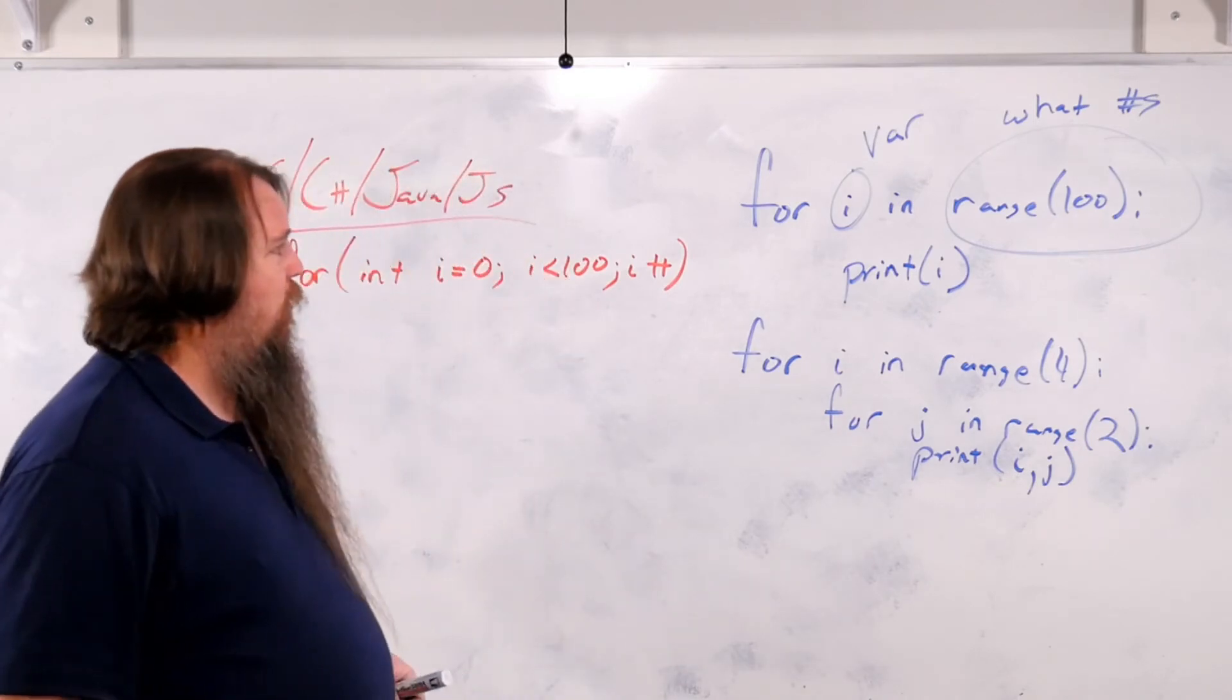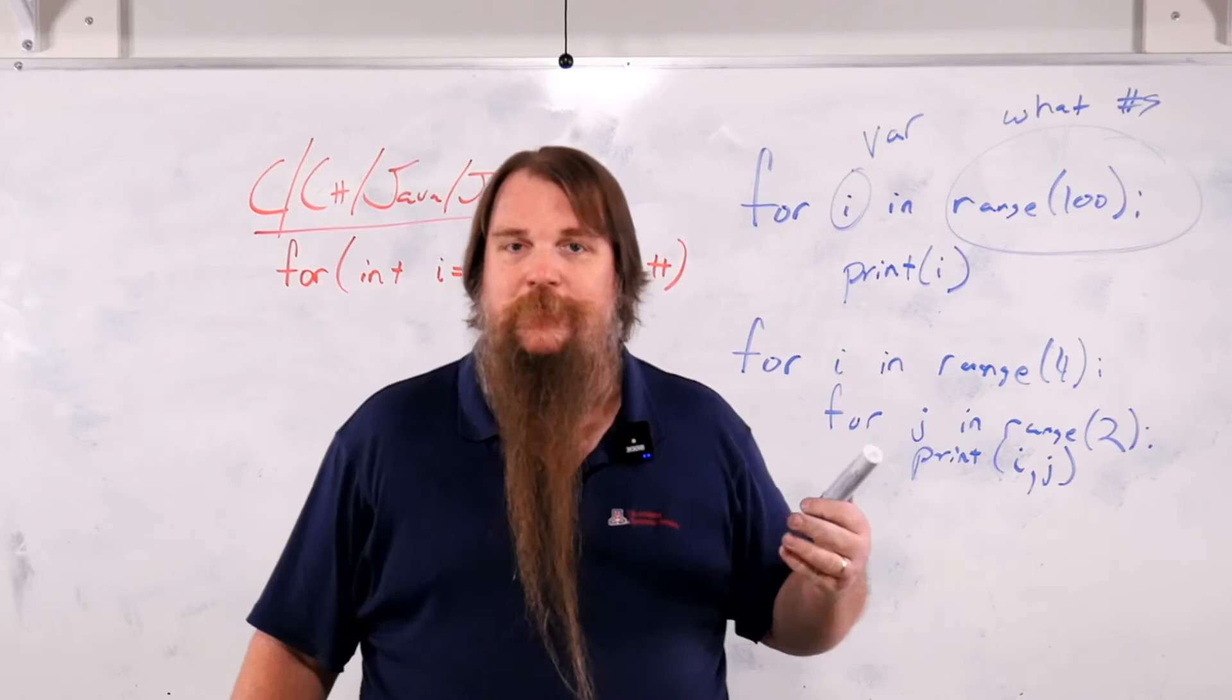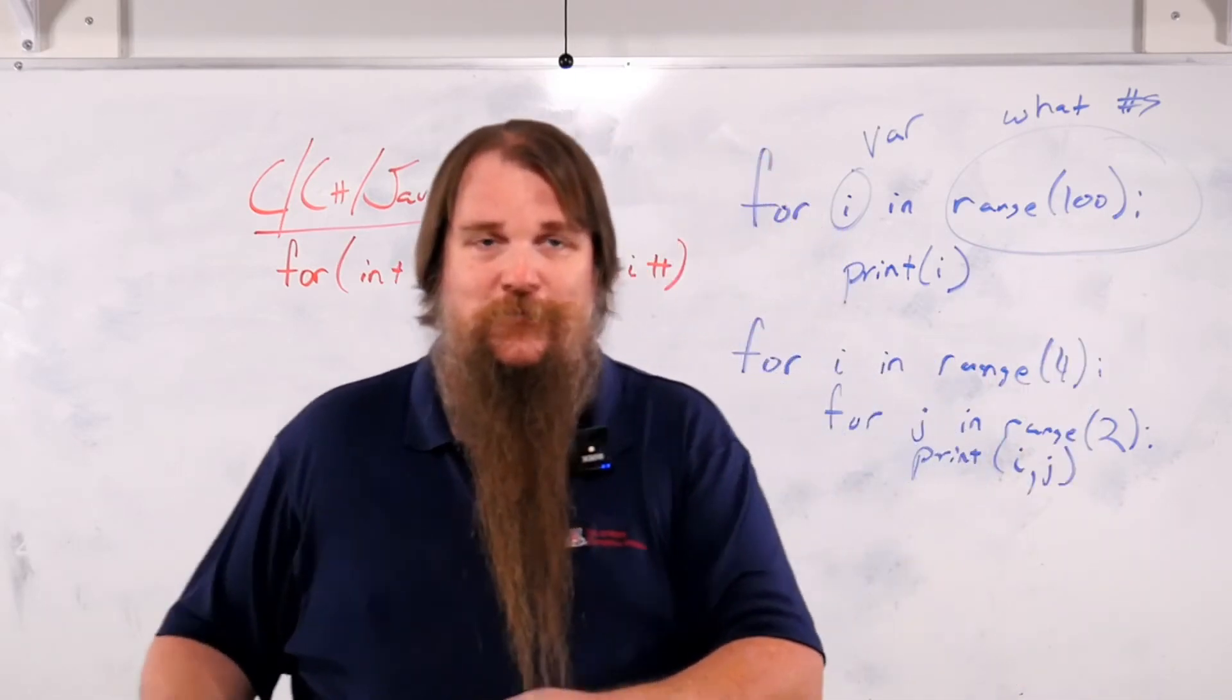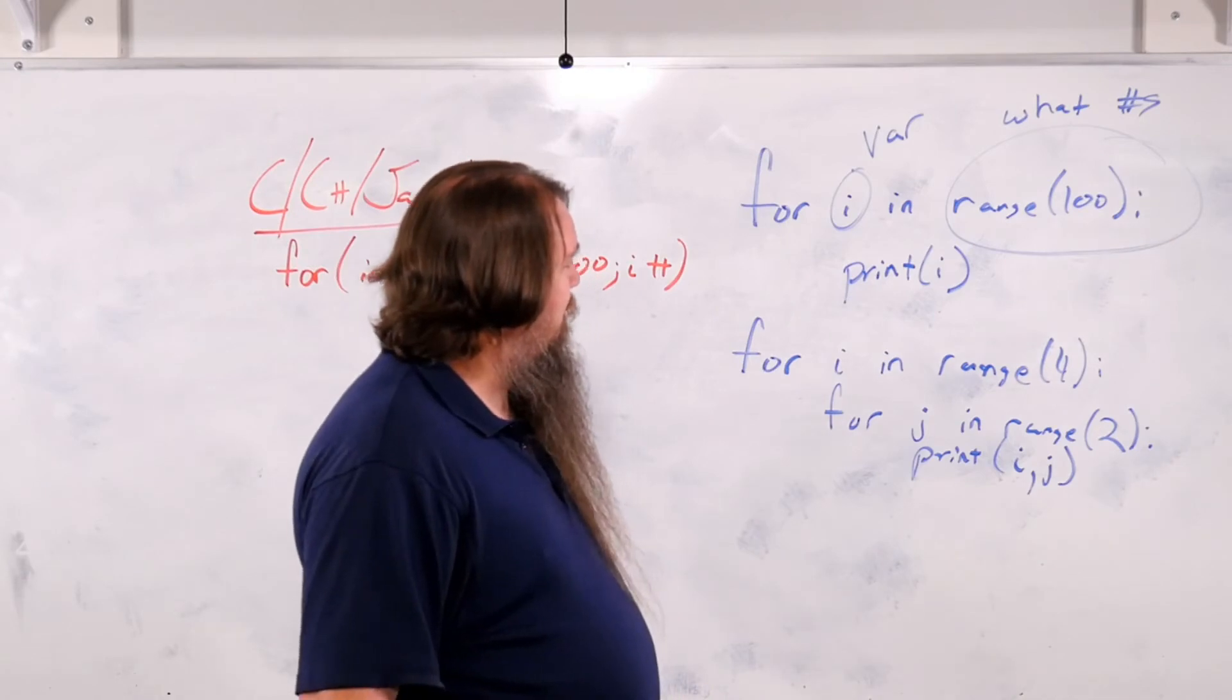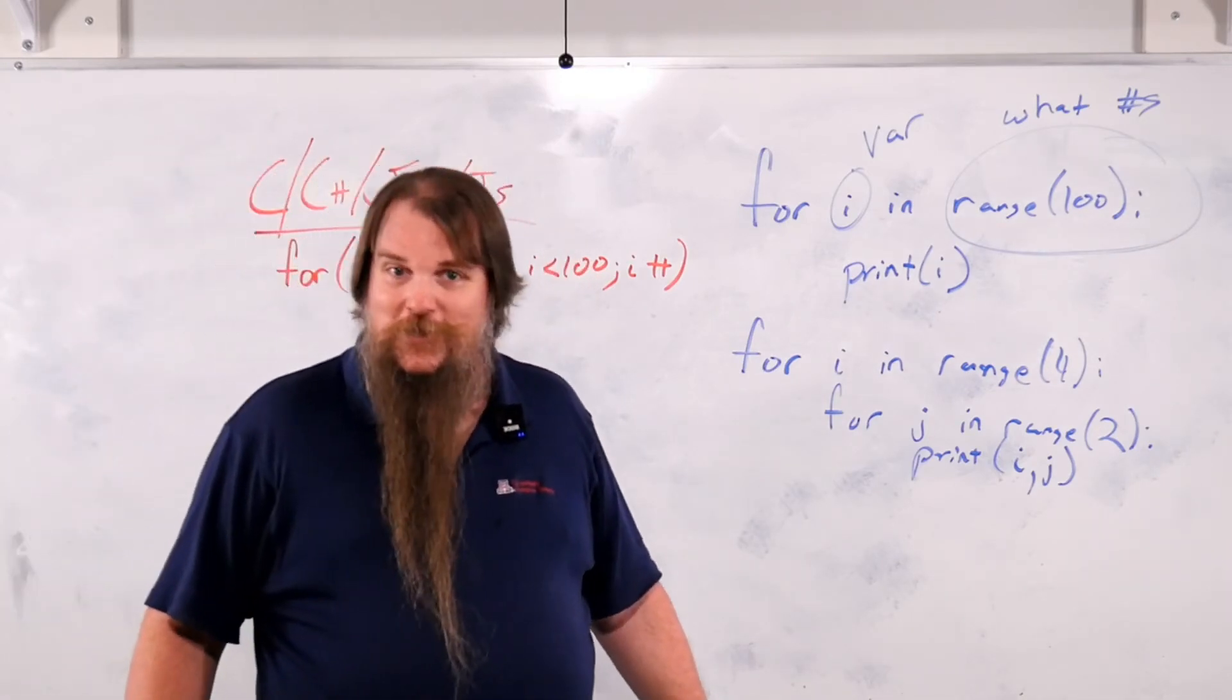Anything else you need to know? What if you do range 0? Then the loop doesn't run, because it goes from 0 to not including 0, and so it never ever runs. And I don't know if I've ever tried range on a negative number. You could experiment with that yourself.